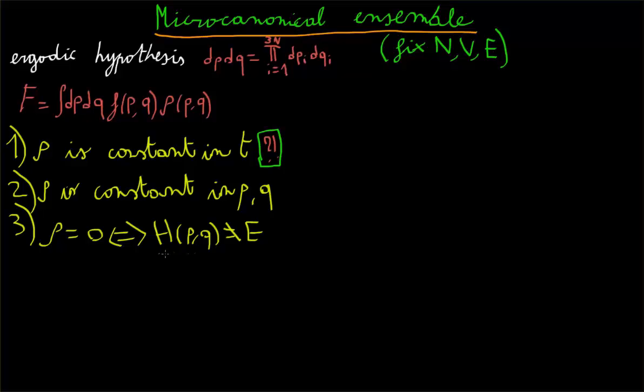If you don't know what the Hamiltonian of the system is, then don't worry, it's not really a concept that we will need that much throughout the course. For us, it's simply the energy associated with a given state of the system. Now, with these assumptions taken all together, we can finally derive how the rho looks like.